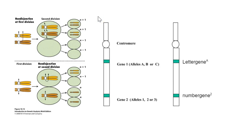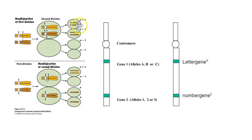If the non-disjunction event happened in meiosis one, the gametes that have too many chromosomes — say this is chromosome 21 — will contain two copies, but one copy is from maternal inheritance and one is from paternal inheritance. In other words, they're the two homologs, and they're therefore going to have differences in allelic composition. The author of this figure is showing that by using two slightly different shadings.